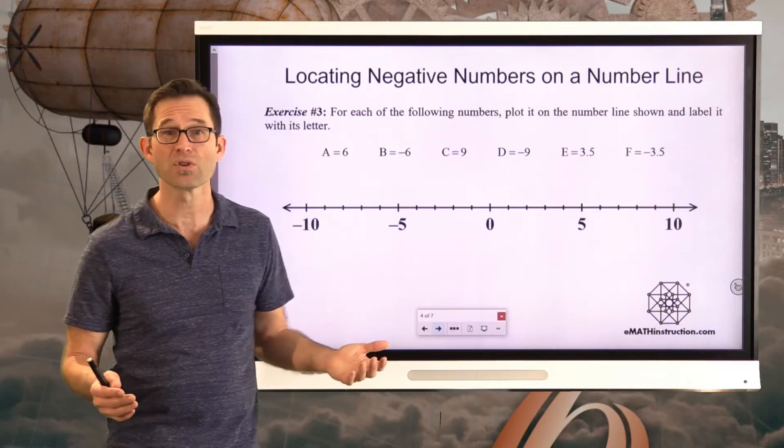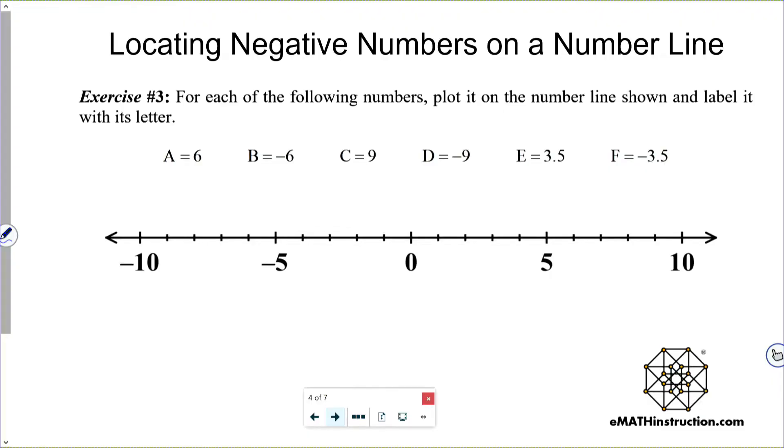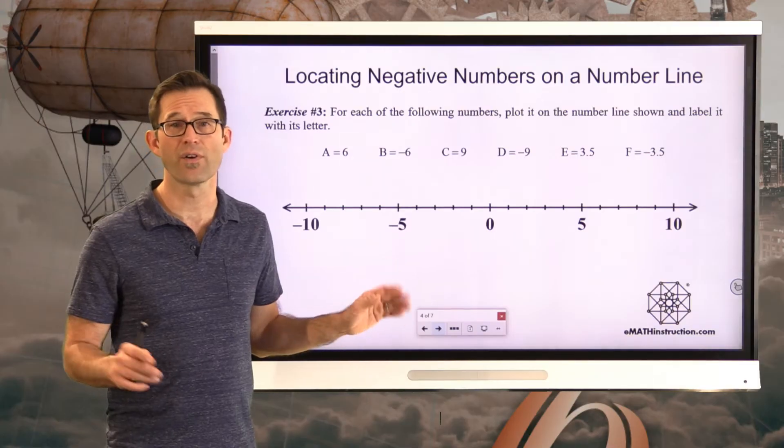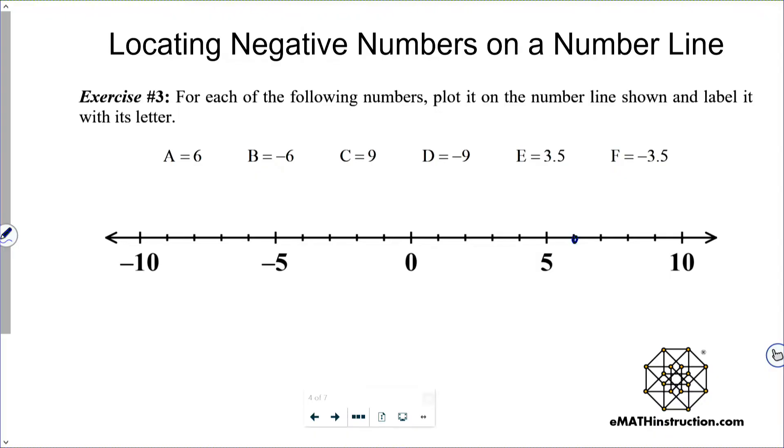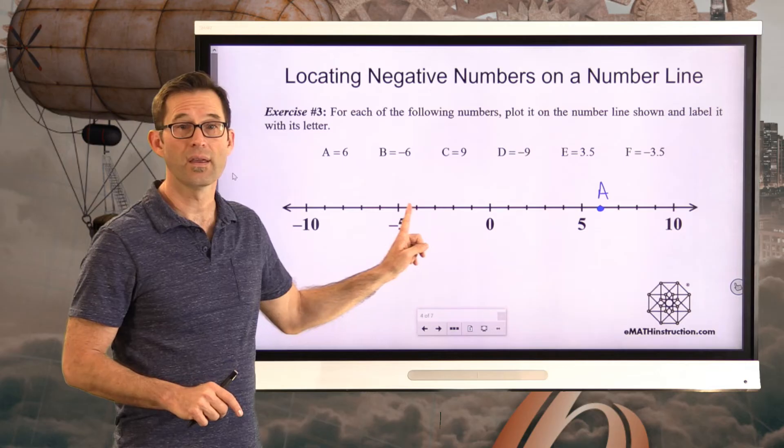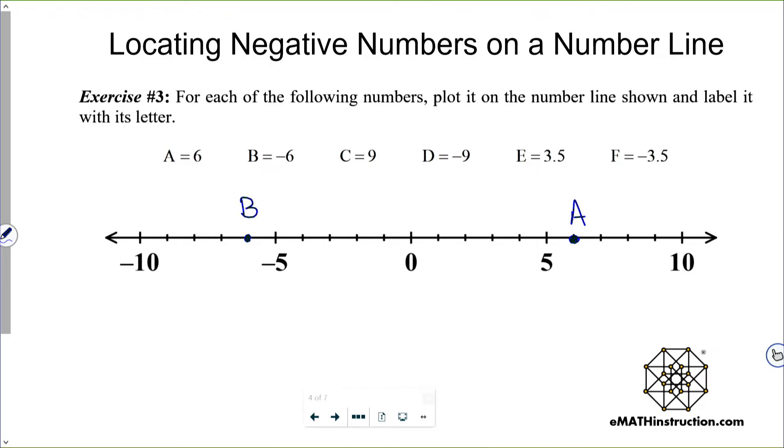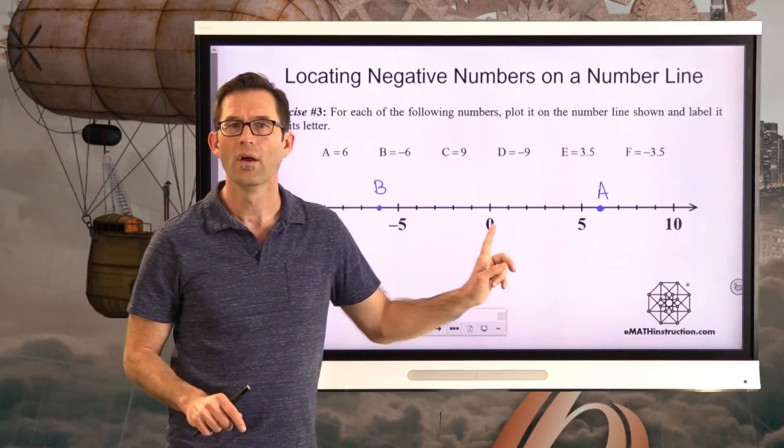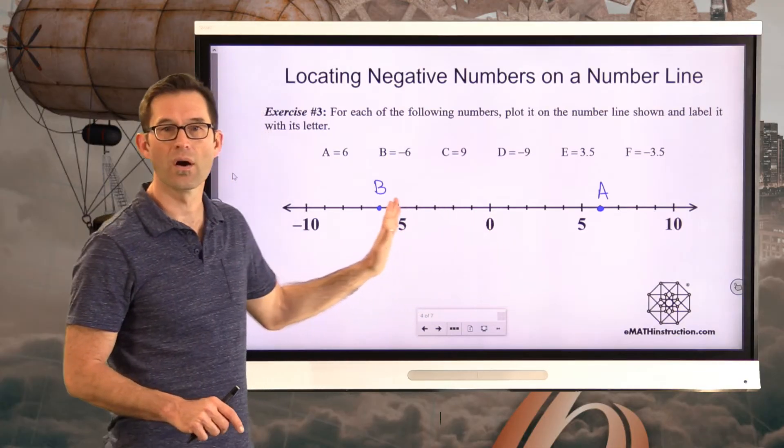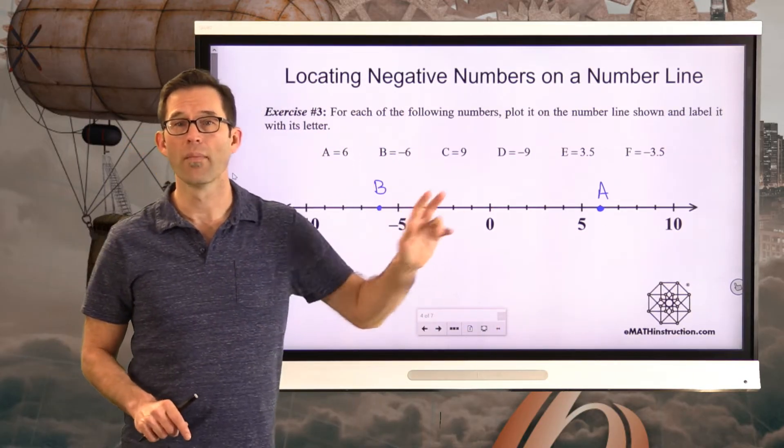In terms of plotting numbers, it's exceptionally easy. So for instance, in exercise three, it says for each of the following numbers, plot it on the number line shown and label it with its letter. Well, plotting A equals six is a piece of cake. That's just like what we've been doing all along. So we're just going to put A right here. But negative six is exactly the same way. All the way to here is negative five. One more is negative six. Now, it's really important because it could be very easy to look at this number line very quickly and go, oh, there's the negative five, so that must be negative six. We're so used to going to the right. So, oh, negative five, negative six. No. Negatives are going to go this way. Positives are going to go that way. Pause the video now and plot the remaining four numbers on this number line.